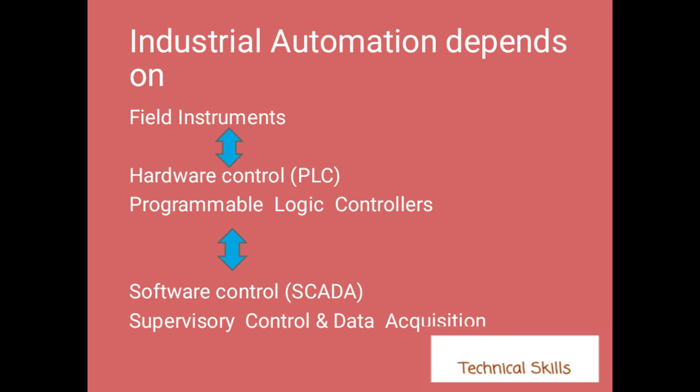SCADA cannot interface directly with field instruments because they speak different languages — SCADA works in KB and MB, while field instruments work in voltage and current. So we need an interface between them, which is the PLC. SCADA is first interfaced with PLC, and PLC is interfaced with field instruments. To send data from SCADA to field instruments, it goes SCADA to PLC to field instruments. Similarly, a temperature sensor sends a signal to PLC, and PLC sends it to SCADA.